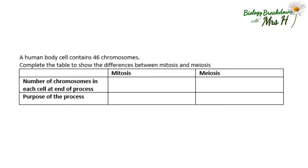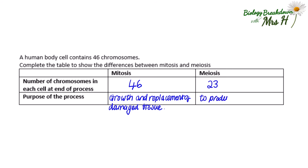A human body cell contains 46 chromosomes. Complete the table to show the differences between mitosis and meiosis. Number of chromosomes in each cell at the end of the process: in mitosis that's 46, and the purpose of mitosis is for growth and the replacement of damaged tissue. The number of chromosomes at the end of meiosis will be half of that — it'll be haploid, so it'll be 23, and the purpose is to produce gametes.